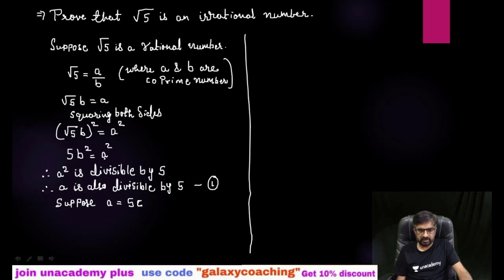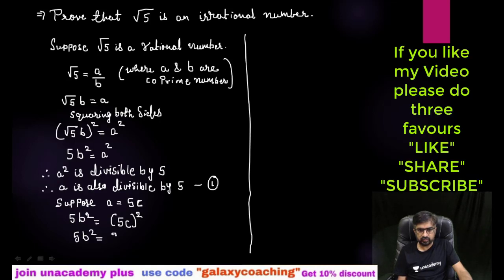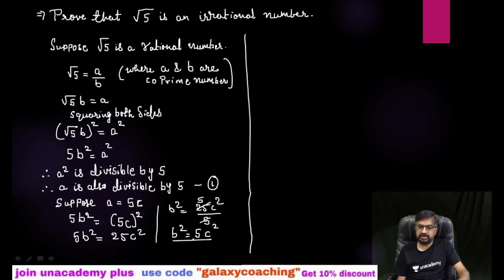5c on the place of a. So 5 b squared equals to 5c whole squared. So what will happen: 5 b squared equals to 25 c squared. Now let me write down some part here. You can say b squared equals to 25 c squared by 5. So this will get cancelled, and you will get b squared equals to 5 c squared.